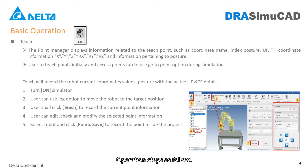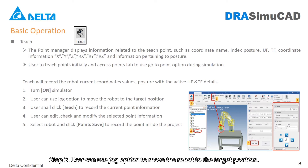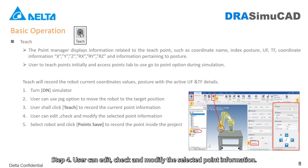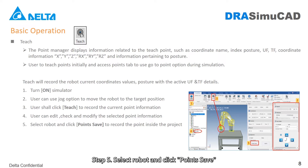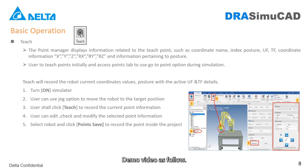Operation steps for Teach: Step 1, turn on simulator. Step 2, use the jog option to move the robot to the target position. Step 3, click TEACH to record the current point information. Step 4, user can edit, check, and modify the selected point information. Step 5, select robot and click Point Save to record the point inside the project. Demo video as follows.